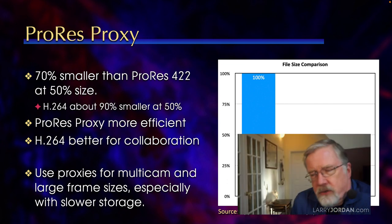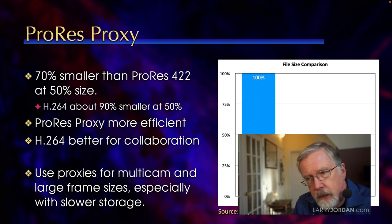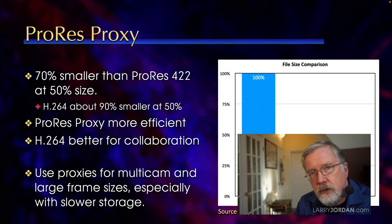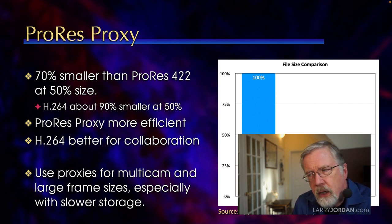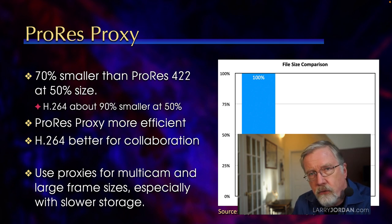The problem is that we can't use Proxy files for final output — the resolution is half of what we shot. It's really designed to simplify rough cuts and especially multicam work. If we're working for yourself, ProRes Proxy is a much more efficient, easier-to-edit format than H.264.